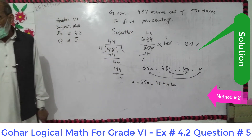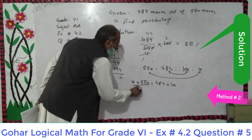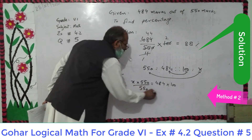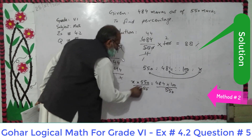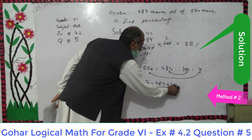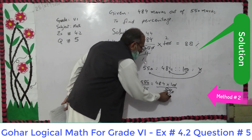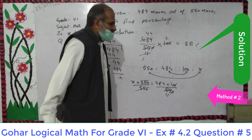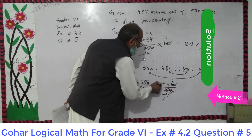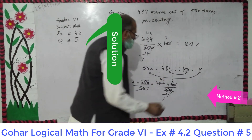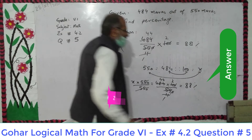X is multiplied by 550, so we divide both sides by 550. The 550s cancel. Then 5 and 11 give 55, 5 and 2 give 10, 11 and 1 give 11, giving 44. If you multiply 44 by 2 you get 88%. So X equals 88%.